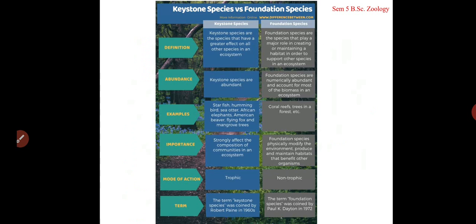Regarding their importance: keystone species strongly affect the composition of the community, while foundation species modify the environment and produce and maintain habitats that benefit other organisms. Foundation species have a great role in supporting the other members of the community.